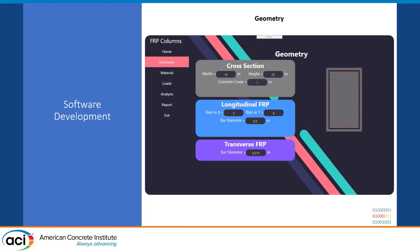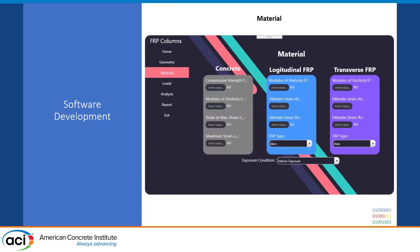The geometry slide covers cross-section width, height, cover, longitudinal FRP — number of bars and bar diameter — transverse bar diameter, and material properties: concrete, longitudinal FRP, and transverse FRP — all the parameters needed for the mechanics calculations, as well as the loads.